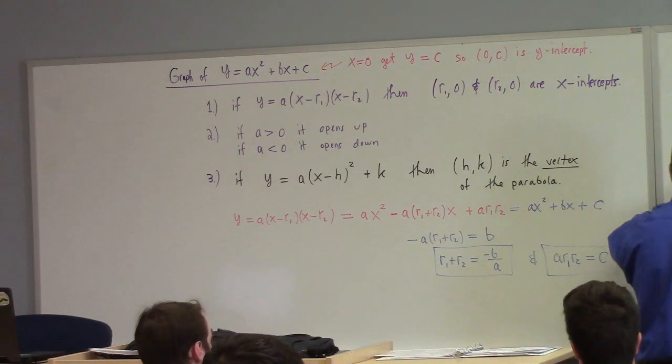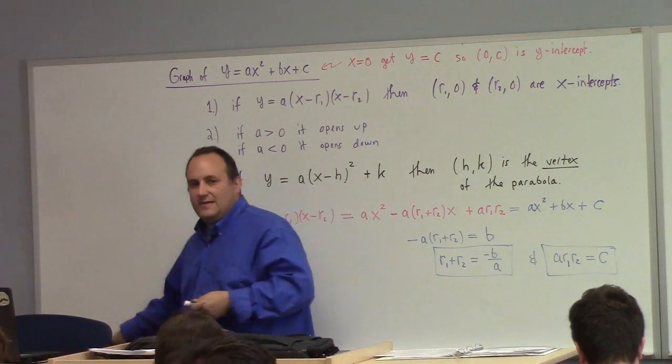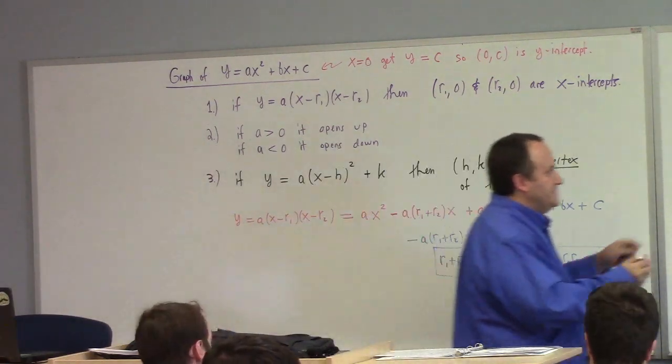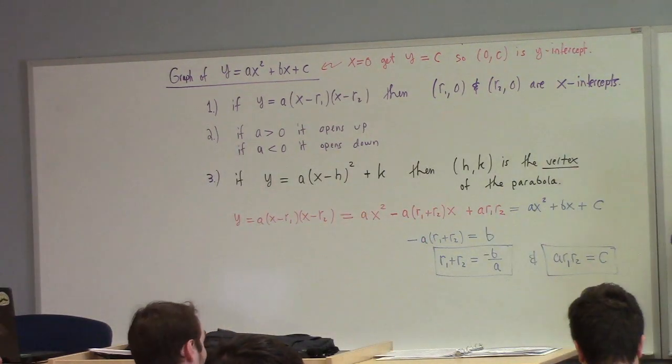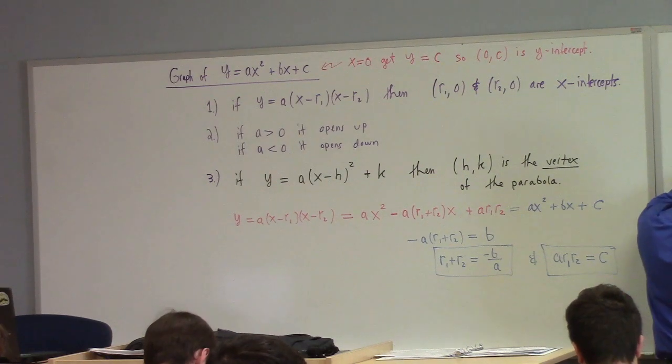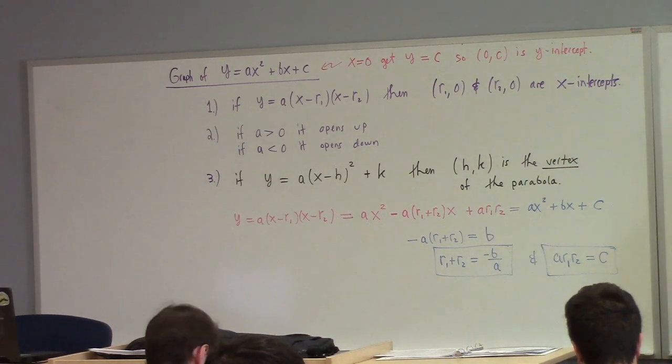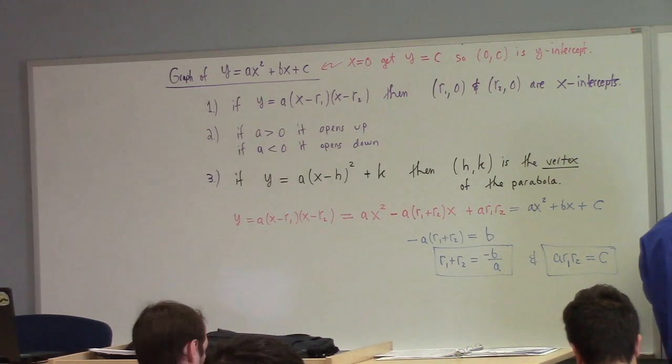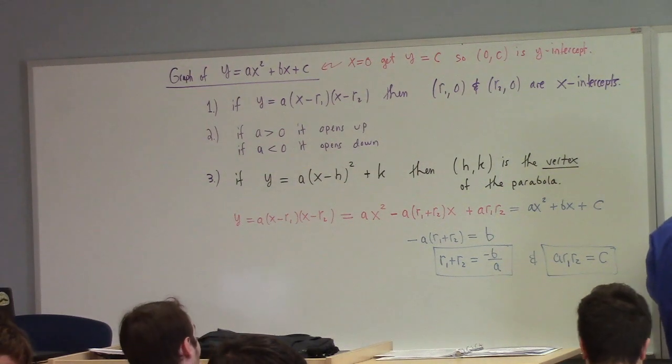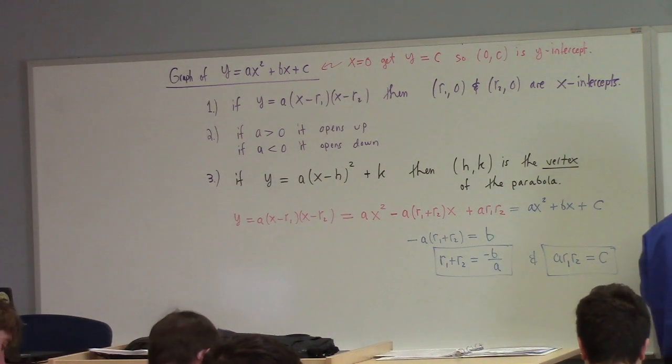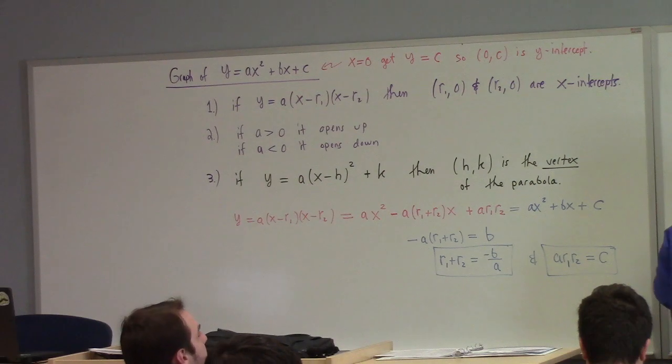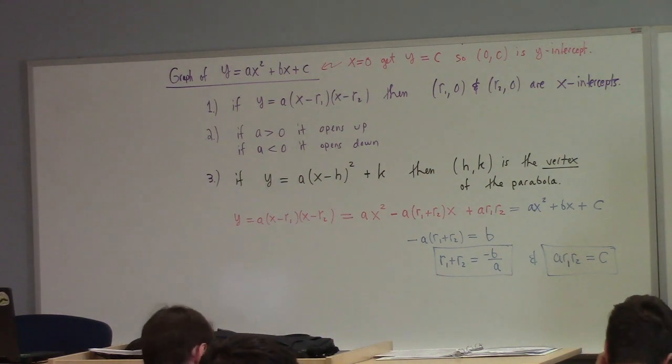So I can equate coefficients, and I can find formulas. First of all, I get a equals a. Again, no one cares. But this right here matches that right there. That's pretty nice. That says that minus 2ahx is equal to b. So lo and behold, we have a formula. H is minus b over 2a. That's worth knowing. Location of vertex in the x sense. That's where it is horizontally speaking.